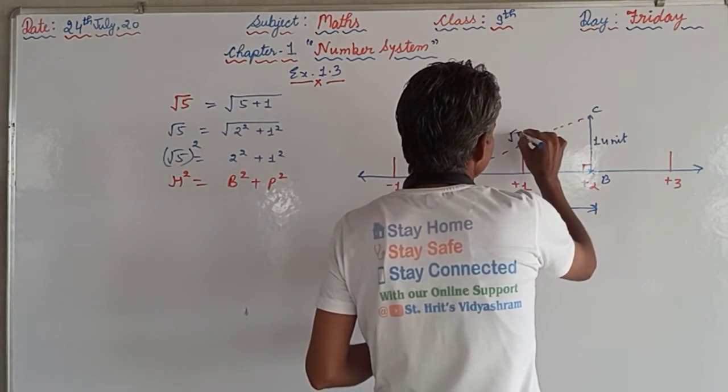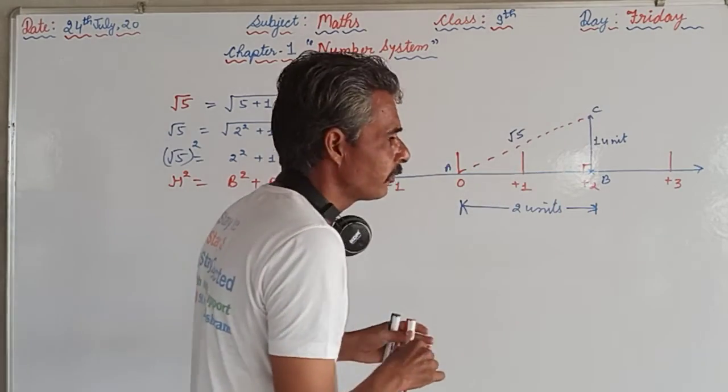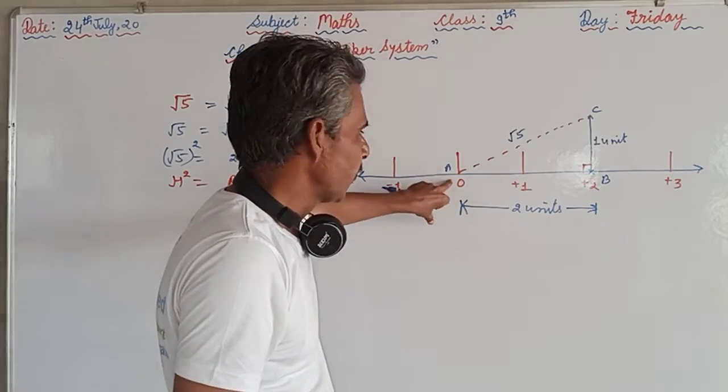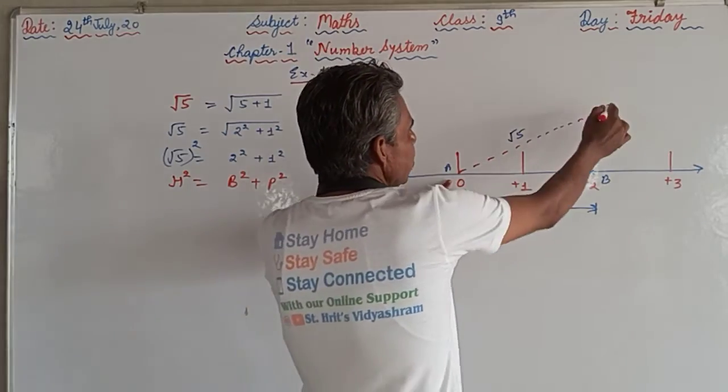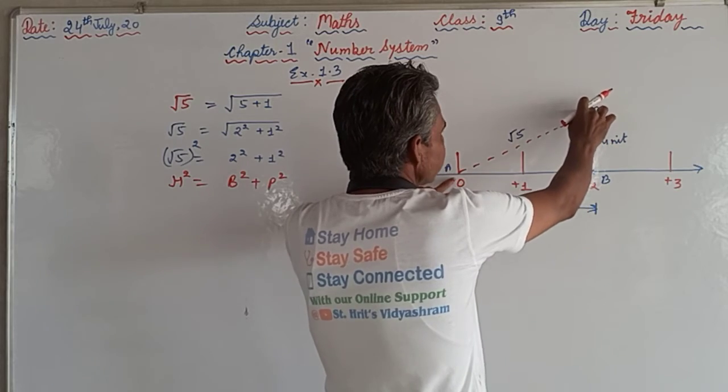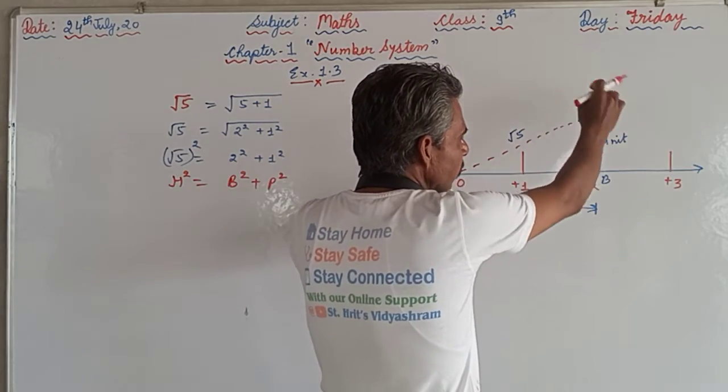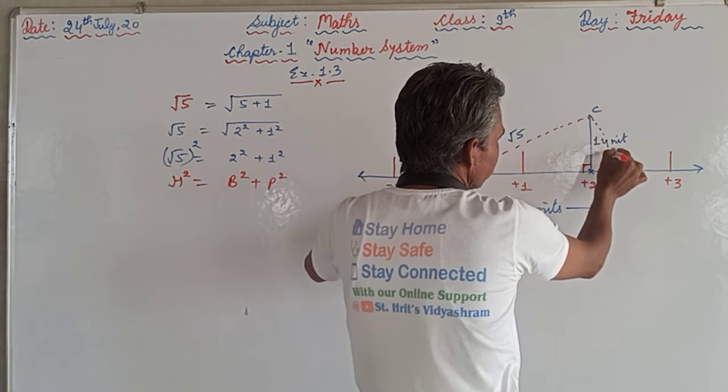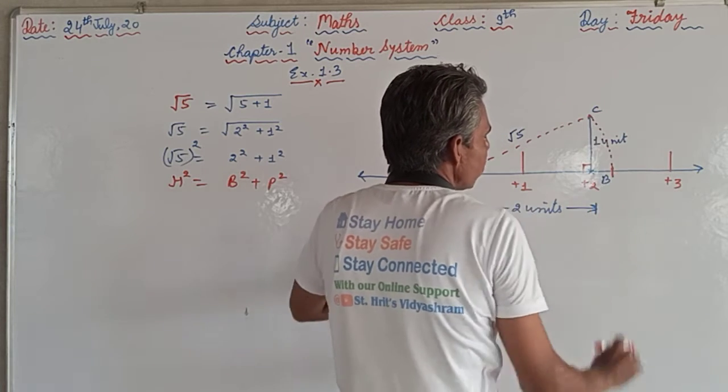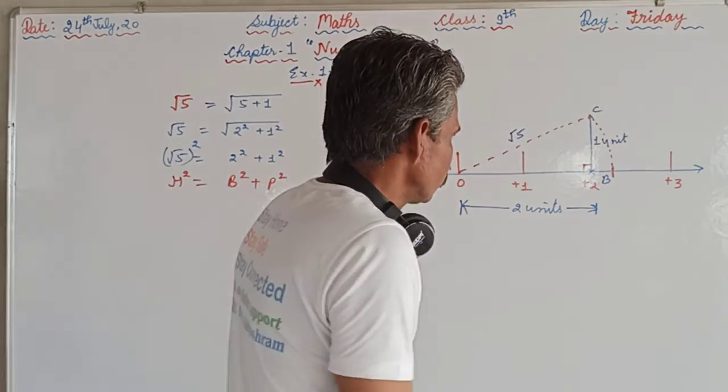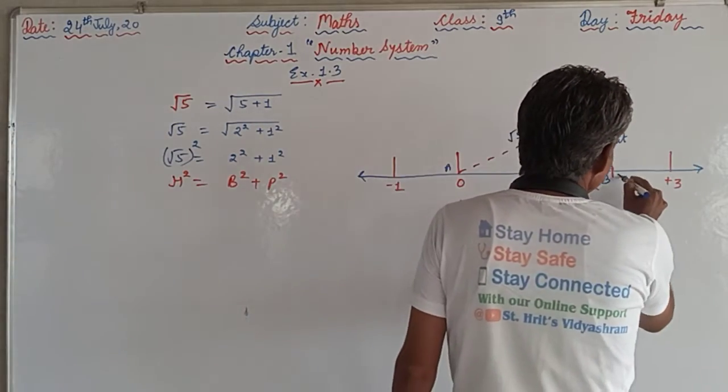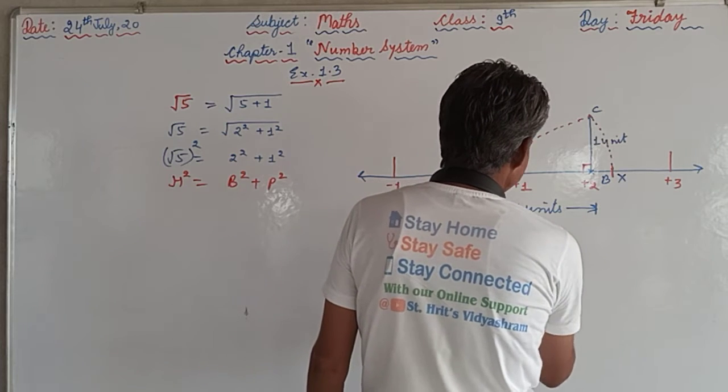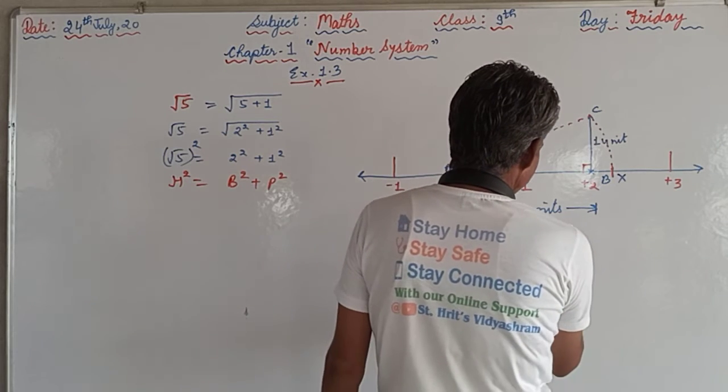ABC is a triangle in which AB is the base, BC is the perpendicular, and AC is the hypotenuse. If we are taking base as 2 units and the perpendicular as 1 unit, the hypotenuse will be under the root 5. What we will do: we will take the compass and we will take O as the center and OC as the radius. Then we will mark one arc on the number line. So let it be cutting at X. So this OX or AX will be under the root 5.